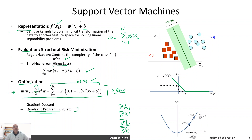Let's step back. The underlying concept of a support vector machine is essentially structural risk minimization, which says we should reduce the amount of error over training examples — the empirical risk minimization component — and also control for regularization, so that a small change in the input doesn't produce a large change in the output. That is achieved by minimizing the squared norm of w. We can break this machine learning problem into two parts: the regularization component and empirical risk minimization.